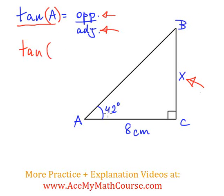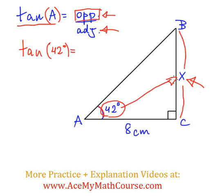So, the tangent of 42 degrees is equal to what? The opposite side to angle A is side BC, which measures x. And x is what we're trying to find.